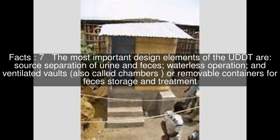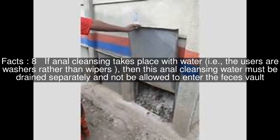The most important design elements of the UDDT are source separation of urine and feces, waterless operation, and ventilated vaults — also called chambers — or removable containers for feces storage and treatment. If anal cleansing takes place with water, i.e., the users are washers rather than wipers, then this anal cleansing water must be drained separately and not be allowed to enter the feces vault.